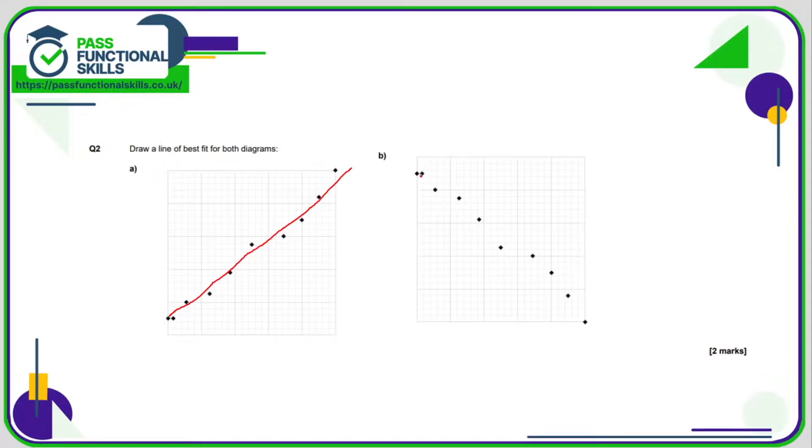For B again a similar thing we're just drawing a line that cuts through. It should be a straight line don't worry about touching points, you're just trying to go through the middle of them really.